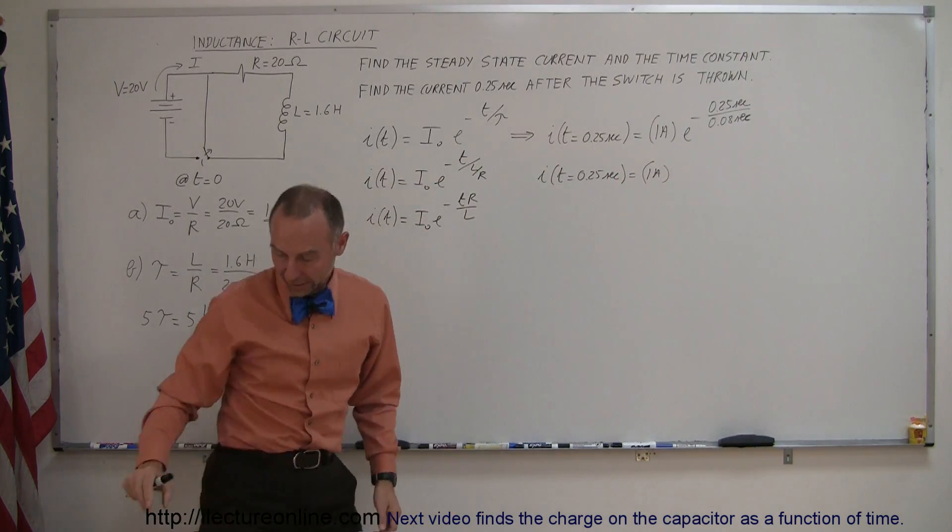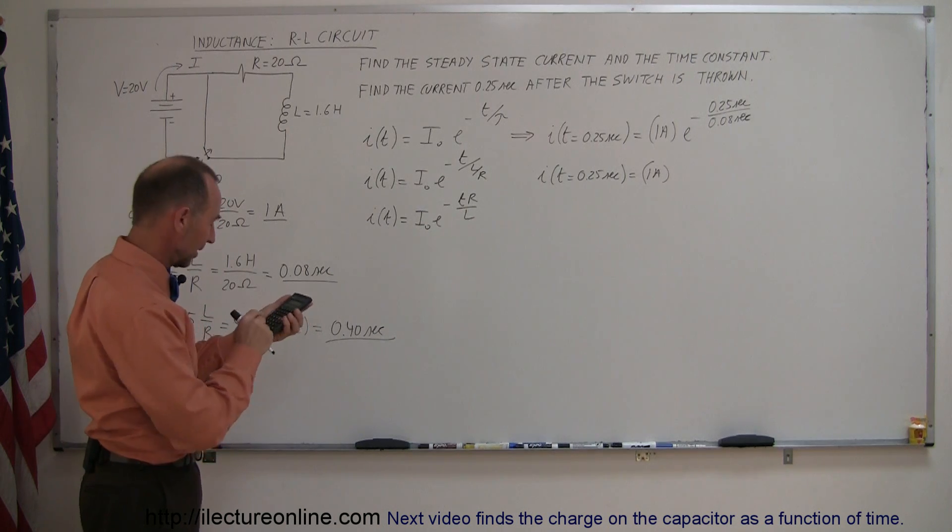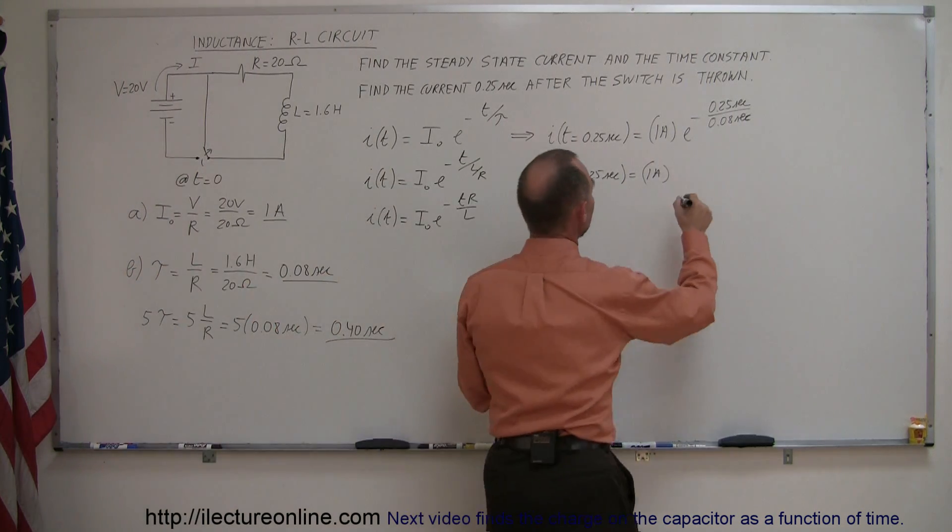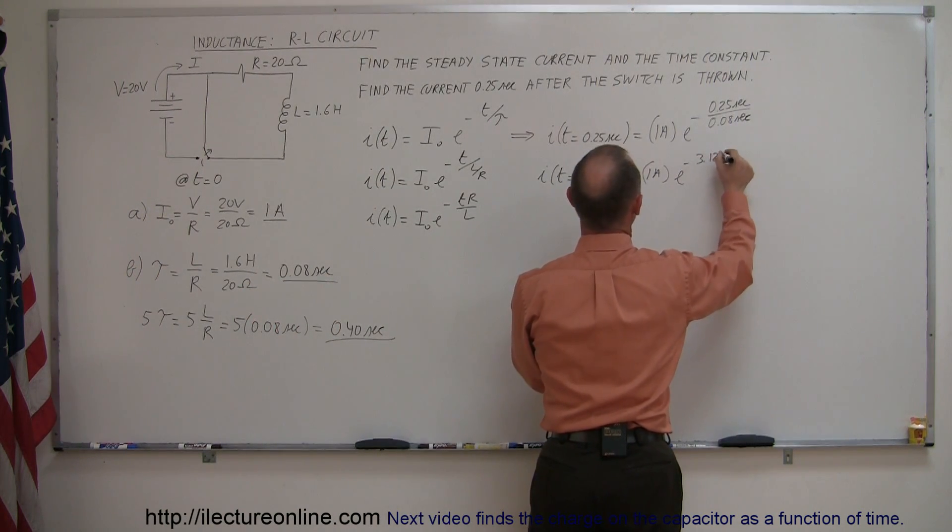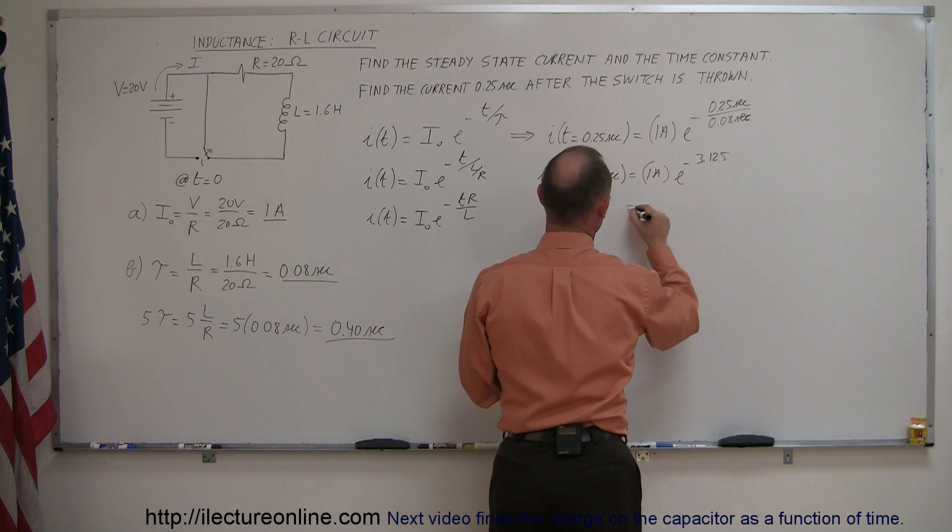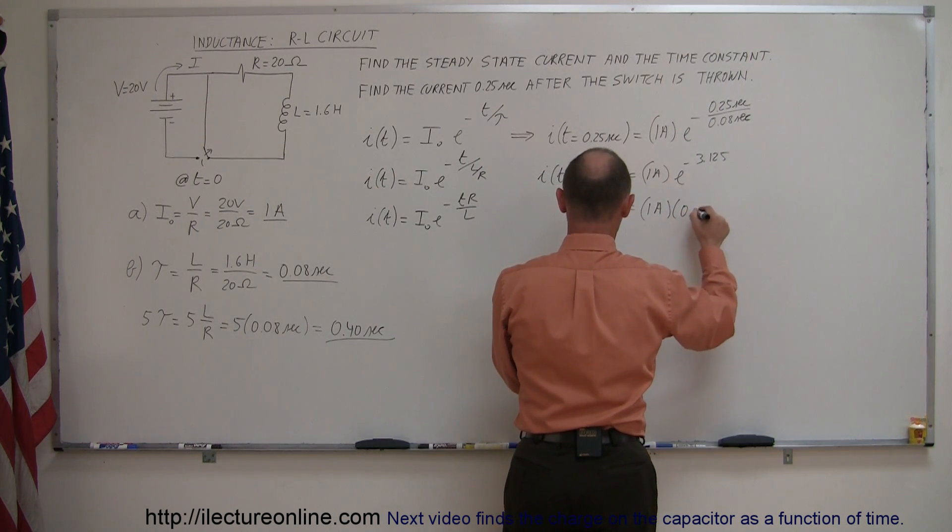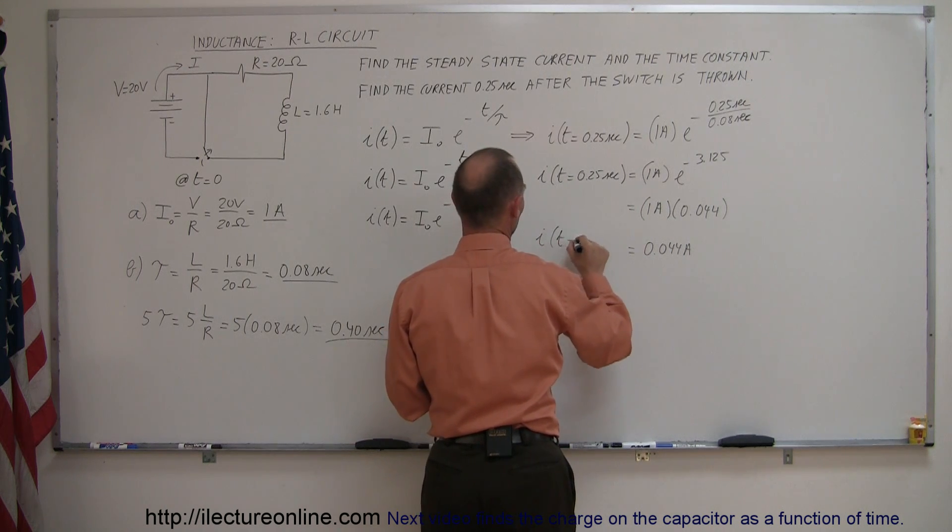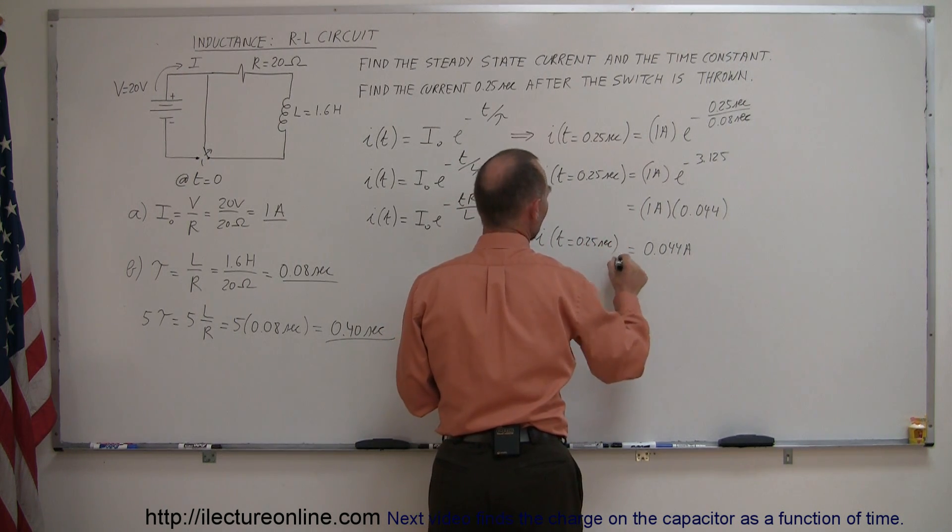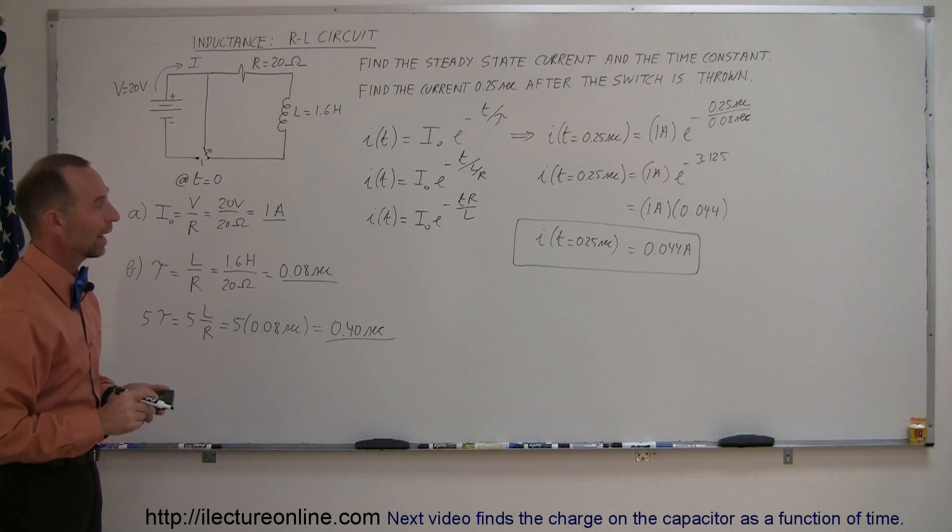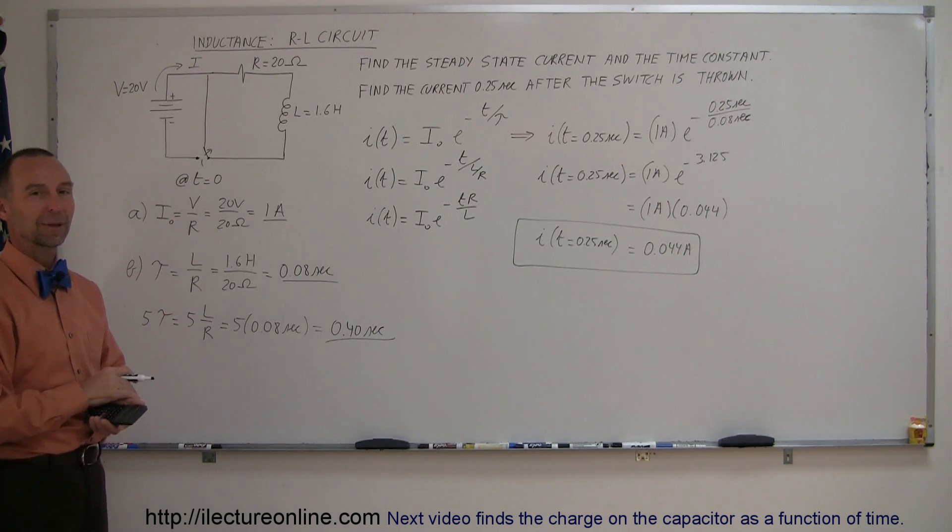i when t is equal to 0.25 seconds is 1 amp times, now I need my calculator which is right here ready for me, so 0.25 divided by 0.08 equals that is e to the minus 3.125. That is equal to 1 amp times 0.044, so that's equal to 0.044 amps, which means that the current after a quarter second in the circuit is now down to only 4.4 percent of its original value or 0.044 amps. And that's how you work a problem like that.